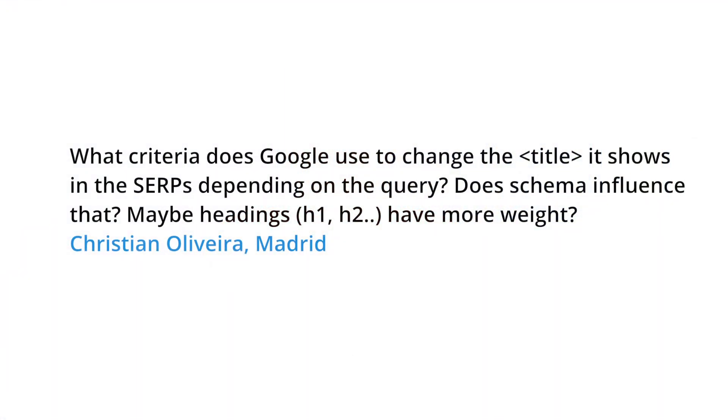Hey everybody. We got a couple questions about titles, so we wanted to do a video about how Google selects the titles that we show in our snippets in our search results. The first question came from Christian in Madrid, and the question was: what criteria does Google use to change the title it shows in the SERPs, depending on the query?